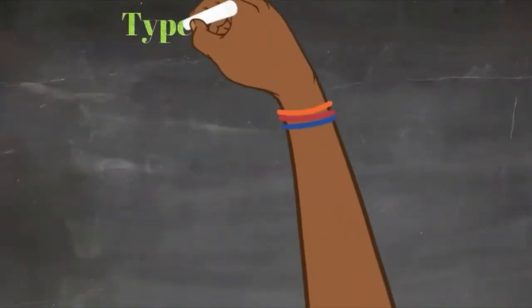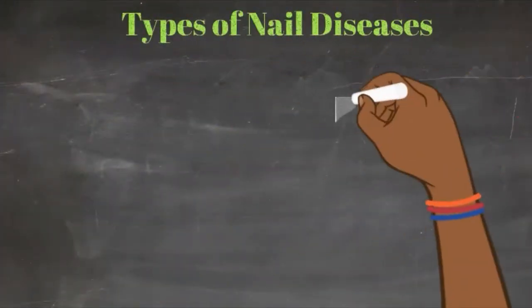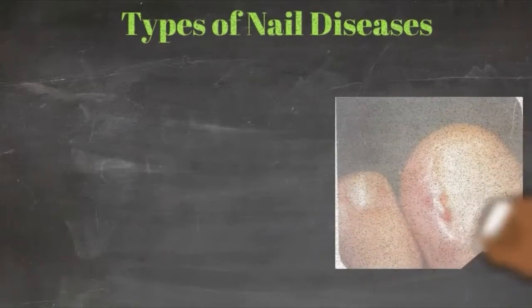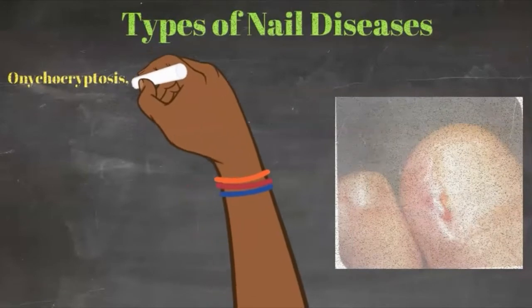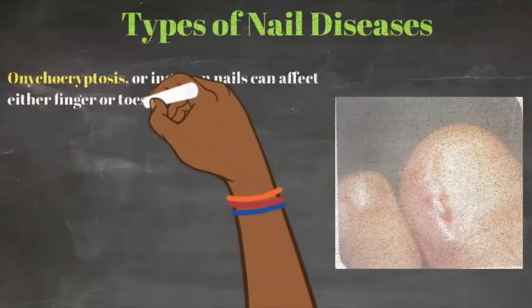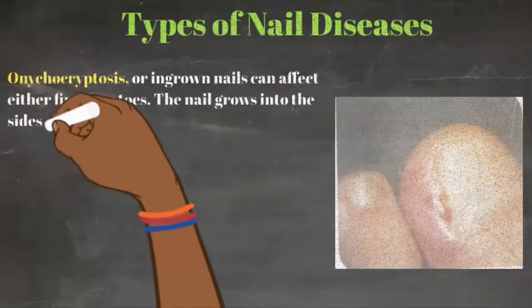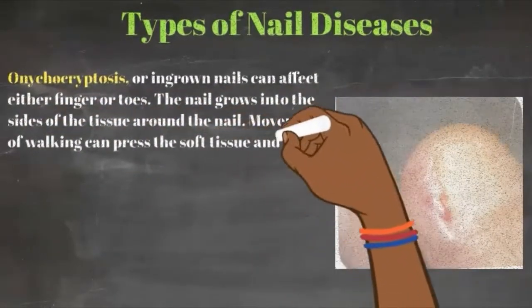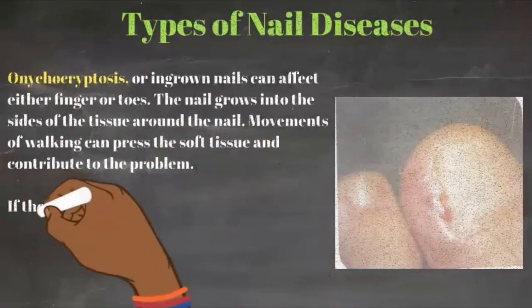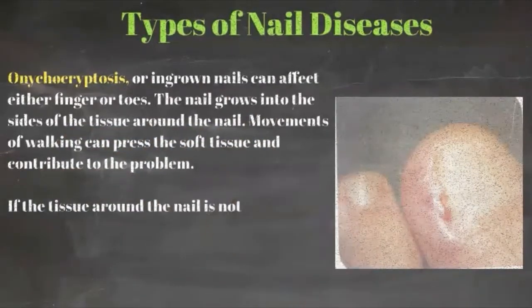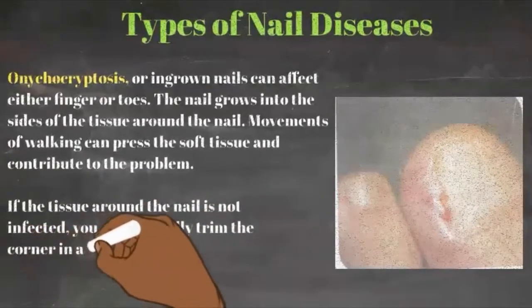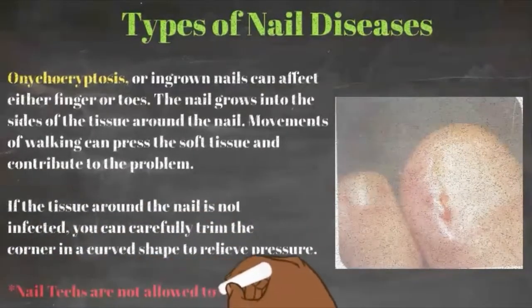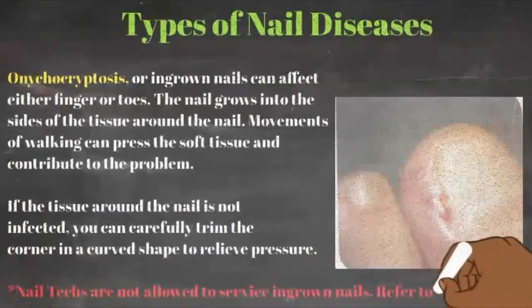Let's talk about some of the types of nail diseases. First up, we have onychocryptosis, or ingrown nails. This can affect either the fingers or the toes — the nail grows into the sides of the tissue around the nail, and the movement of walking can easily cause problems for the client. If the tissue around the nail is not infected, we can carefully trim the corners and curve them out to relieve some pressure. Remember that a nail technician is not allowed to service ingrown nails; if you do, refer them to a physician.